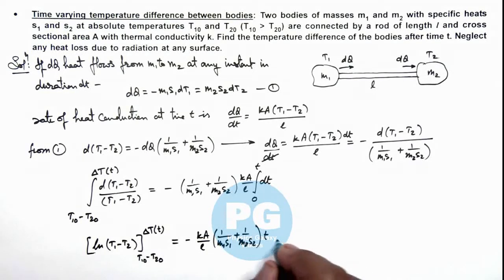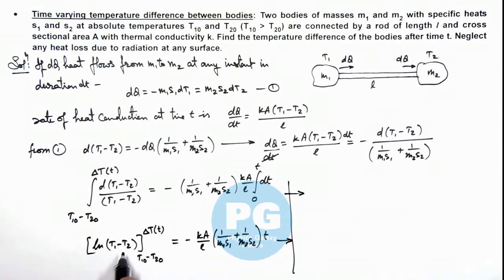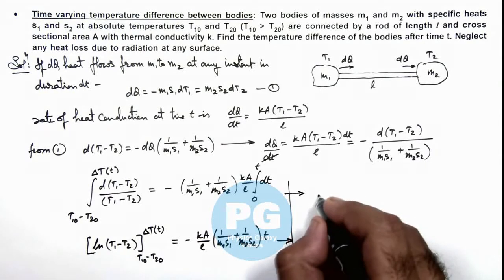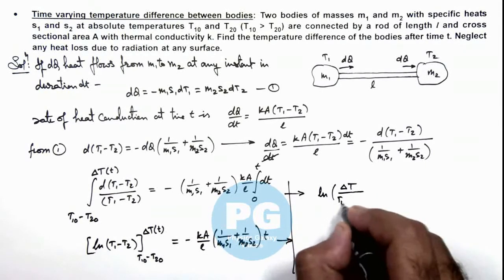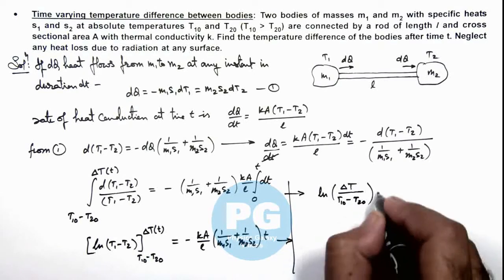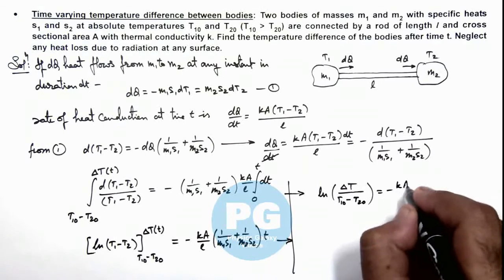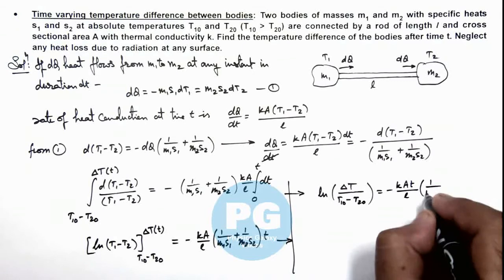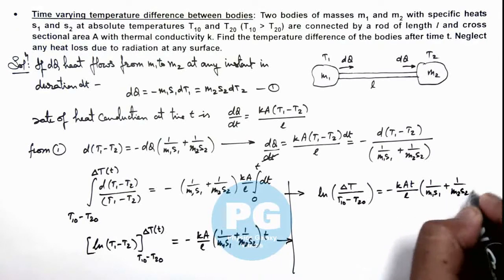Now if we simplify these terms, here you can see on substituting the limit this becomes ln(ΔT/(T₁₀ - T₂₀)), and right hand side is same as -kA/l multiplied by (1/m₁s₁ + 1/m₂s₂).